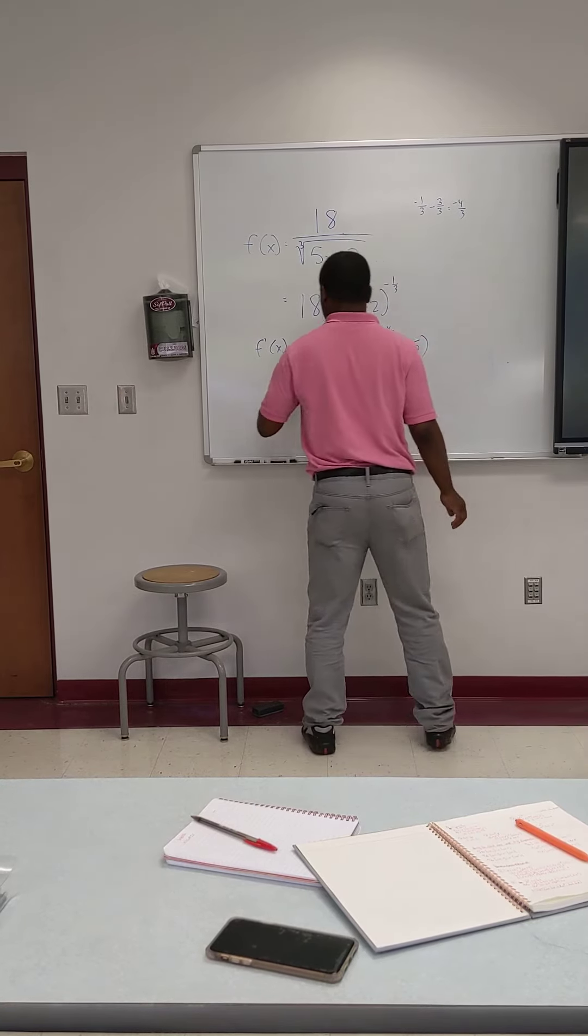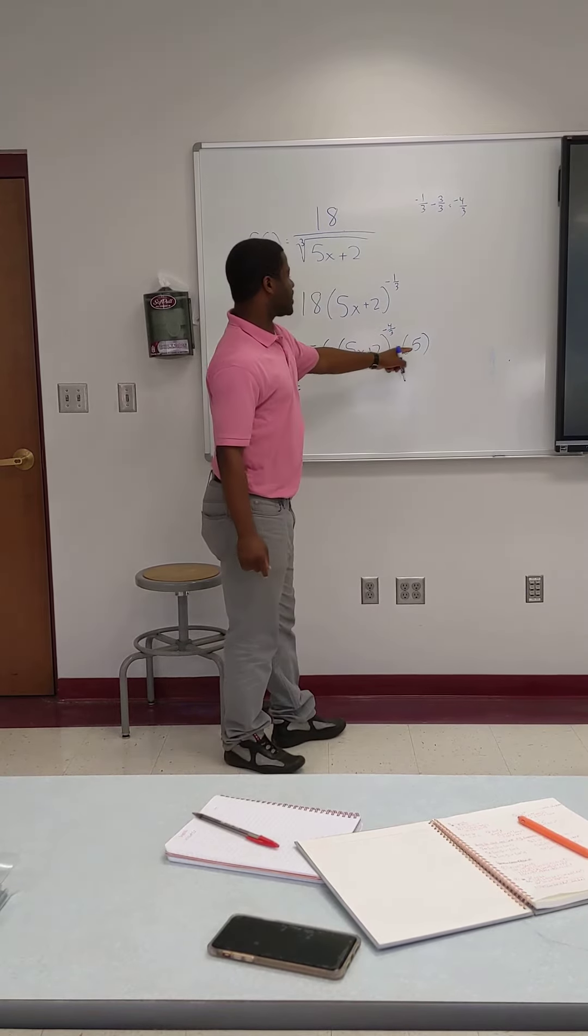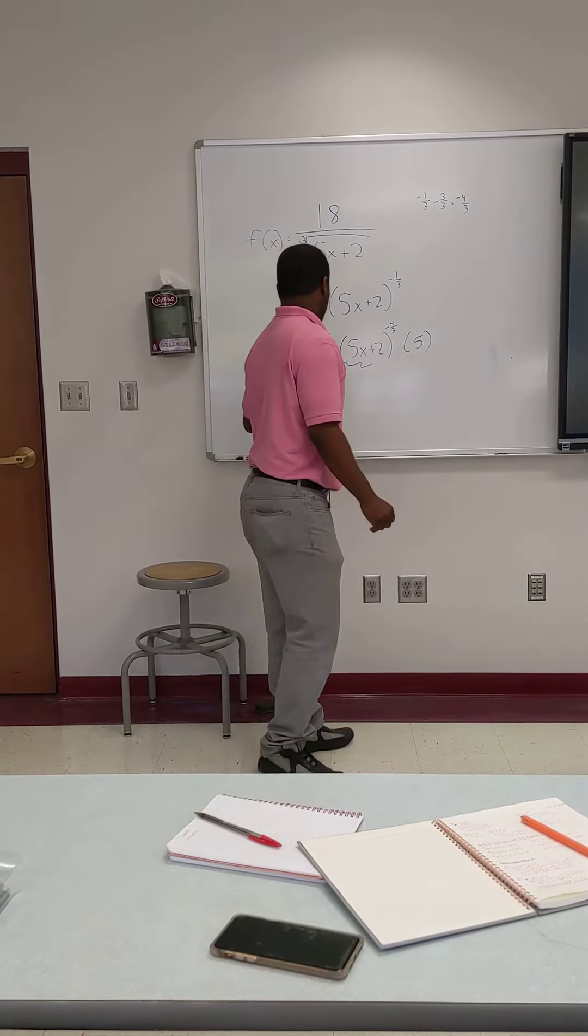So now as we simplify, negative 6 times 5 will give us negative 30 times (5x + 2) to the negative 4/3.